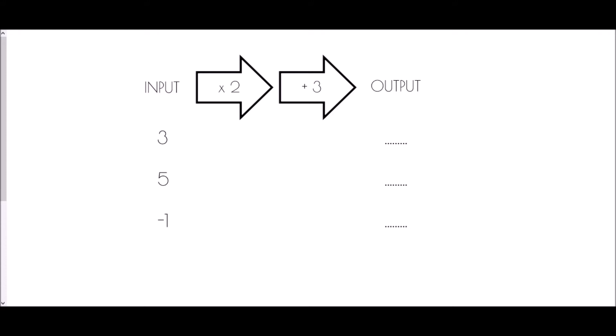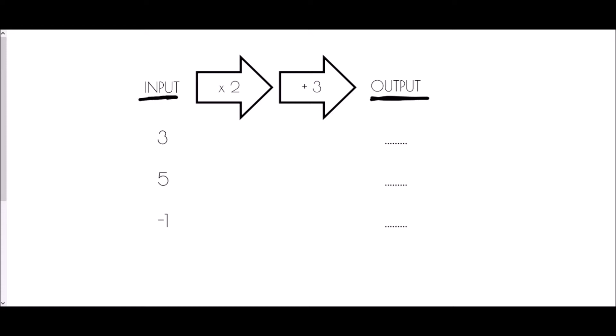A function machine is a set of processes where we start with an input — a number that we put into the machine. It goes through a couple of processes; in this case, it's times two and then adding three, and it produces an output. We're going to find the outputs when we have an input of three, five, and negative one.